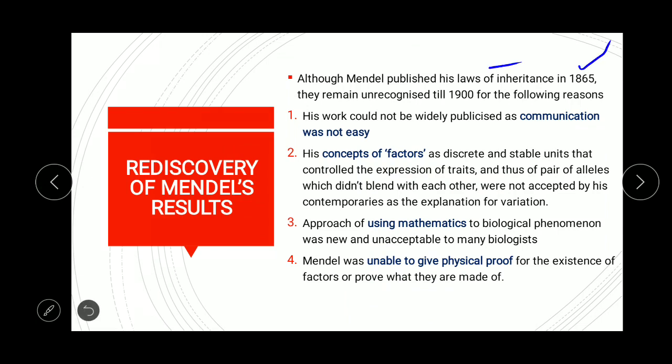Although Mendel published his results — that is the laws of inheritance — in 1865, he remained unrecognized until 1900, a gap of about 35 years. There must be some reasons why he was going unnoticed or unrecognized in the scientific community.